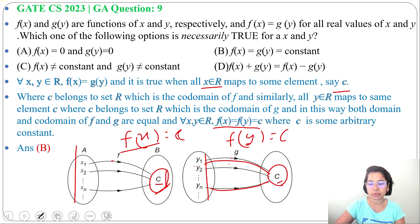In this way both domain and codomain of f and g are equal. x1, x2 up to xn map to c, y1, y2 up to yn map to c. So you can say x1, x2 up to xn are equivalent to y1, y2 up to yn. Both domain and codomain are equal.